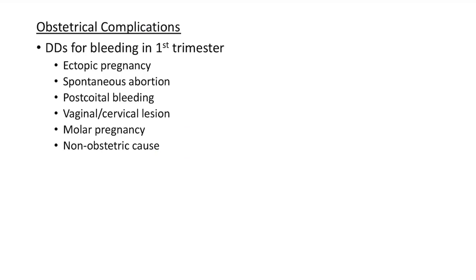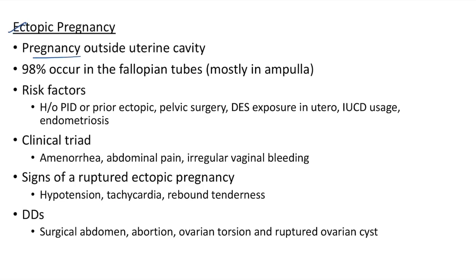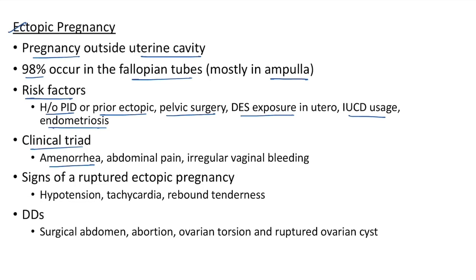Differential diagnosis for bleeding in the first trimester: ectopic pregnancy, spontaneous abortion or miscarriage, post-coital bleeding, vaginal or cervical lesion, molar pregnancy, and non-obstetrical causes. Ectopic pregnancy is pregnancy outside the uterine cavity. 98% of ectopic pregnancies occur in the fallopian tubes, mostly in the ampulla. Risk factors include history of pelvic inflammatory disease, previous ectopic pregnancy, pelvic surgery, DES exposure in utero, IUD usage, and endometriosis. The clinical triad of ectopic pregnancy: amenorrhea, abdominal pain, and irregular vaginal bleeding.